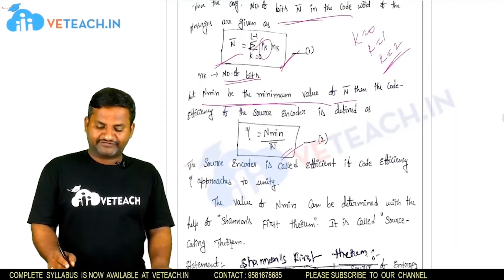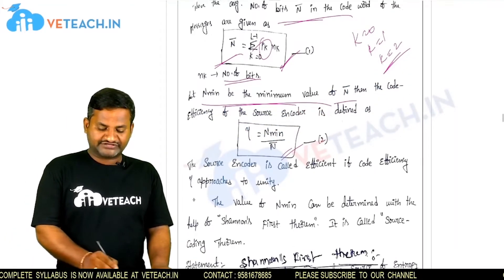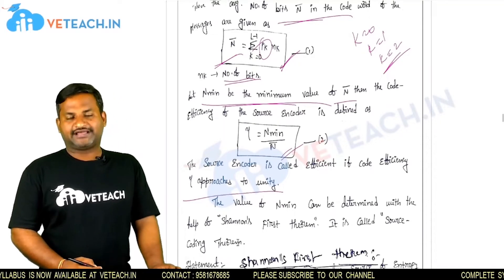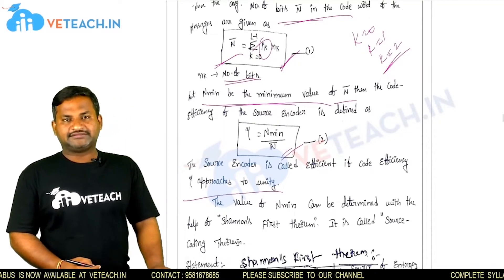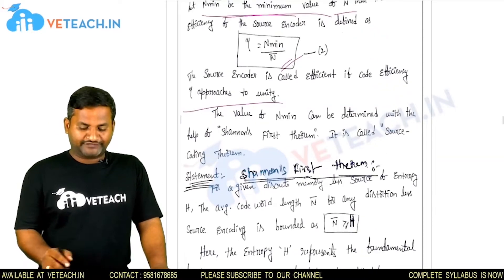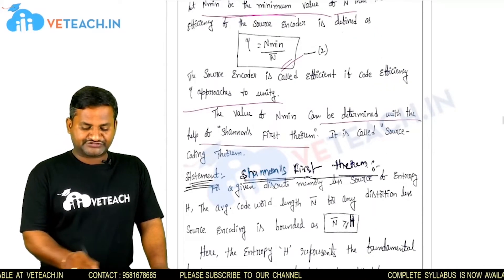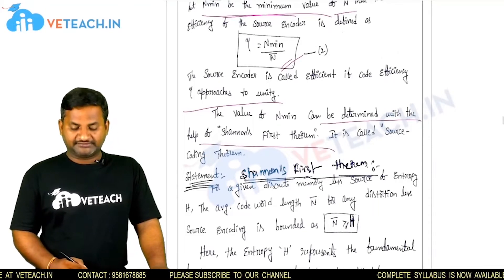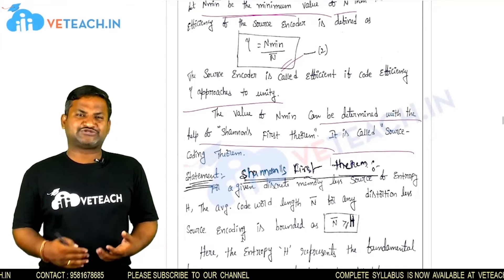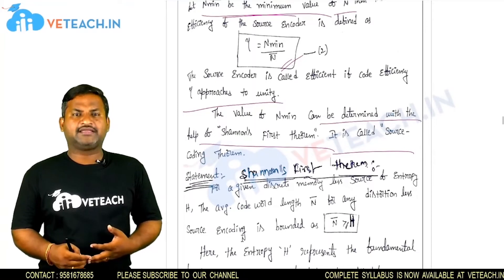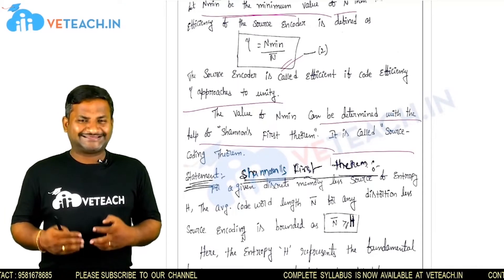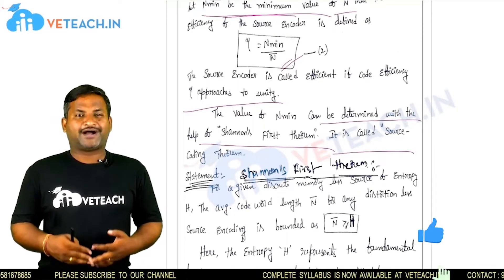The source encoder is called efficient if code efficiency approaches unity — that is, when the value approaches 1. The value of n-minimum can be determined with the help of Shannon's first theorem, also called the source coding theorem. In these concepts, we can explain Shannon-Fano coding and Huffman coding — how the coding will be generated and how the data is going to be transmitted. After the coding is generated, the modulation process takes place.